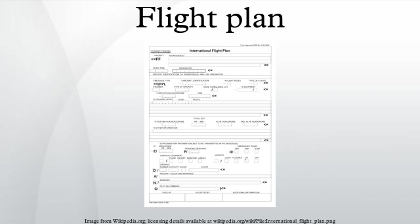Destination is the point of intended landing, typically the identifier of the destination airport. Estimated time en route is the planned elapsed time between departure and arrival at the destination. Remarks include any information the PIC believes is necessary to provide to ATC. One common remark is SSNO, which means the PIC is unable or unwilling to accept a SID or STAR on an IFR flight. Fuel on board indicates the amount of fuel on board the aircraft in hours and minutes of flight time.